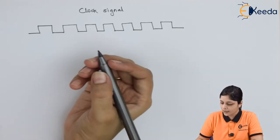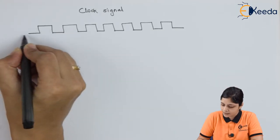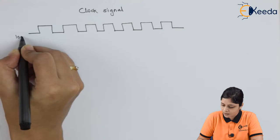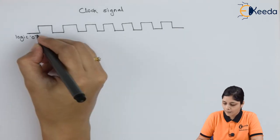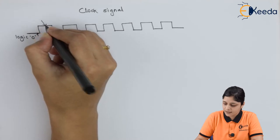Now we have to denote the parameters. This line is called the logic 0 line, and this is called logic 1.